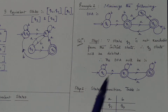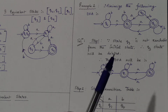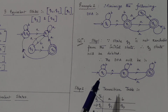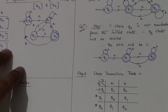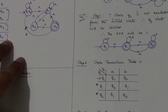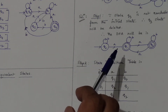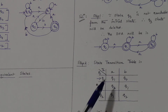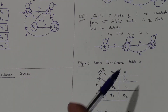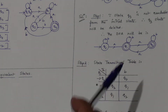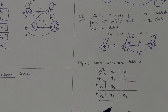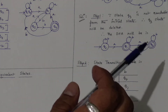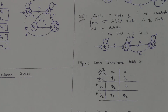After deletion, the state diagram now has three states instead of four. We need to check whether it can be minimized further, so we proceed with the zero equivalence process. Step two says we construct the transition table. For q0 on input a it goes to q1, on input b it goes to q0. For q1 on input a it goes to q2, on input b it goes to q1. For q2 on input b it goes to q2.